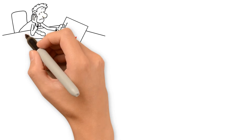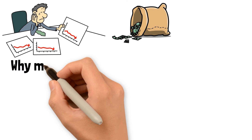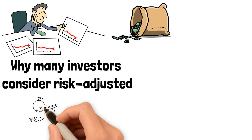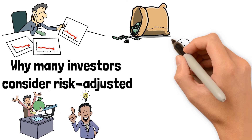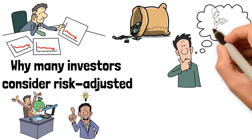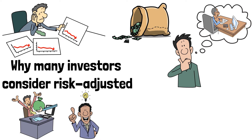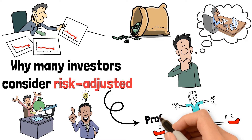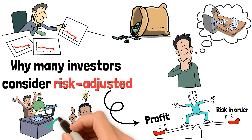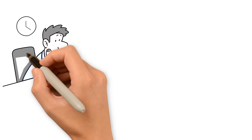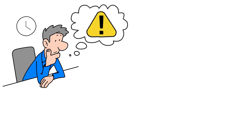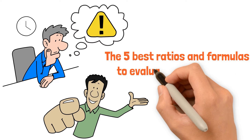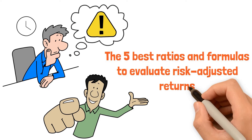The risk of losing money is part of investing and trading, and this is why many investors consider risk-adjusted returns when evaluating investment and trading strategies. But what exactly is risk-adjusted return, and how do you calculate it? Risk-adjusted return is a measure that compares the profit against the risk in order to achieve the returns. There are many ways to measure risk-adjusted return, and in this video we'll cover what we consider the five best ratios and formulas to evaluate risk-adjusted returns.